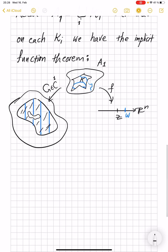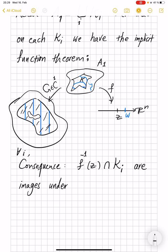The consequence is that the part of f inverse z intersected with k_i, so for each i, this set, this is the blue pre-images in the original domain, but these become images under C^1 maps, here this will be g inverse.